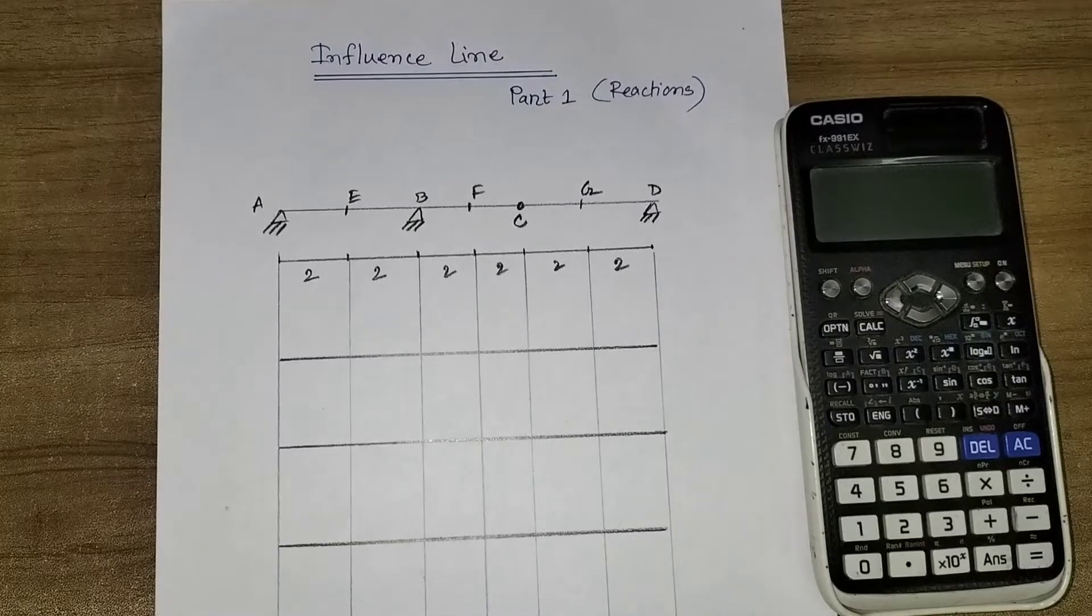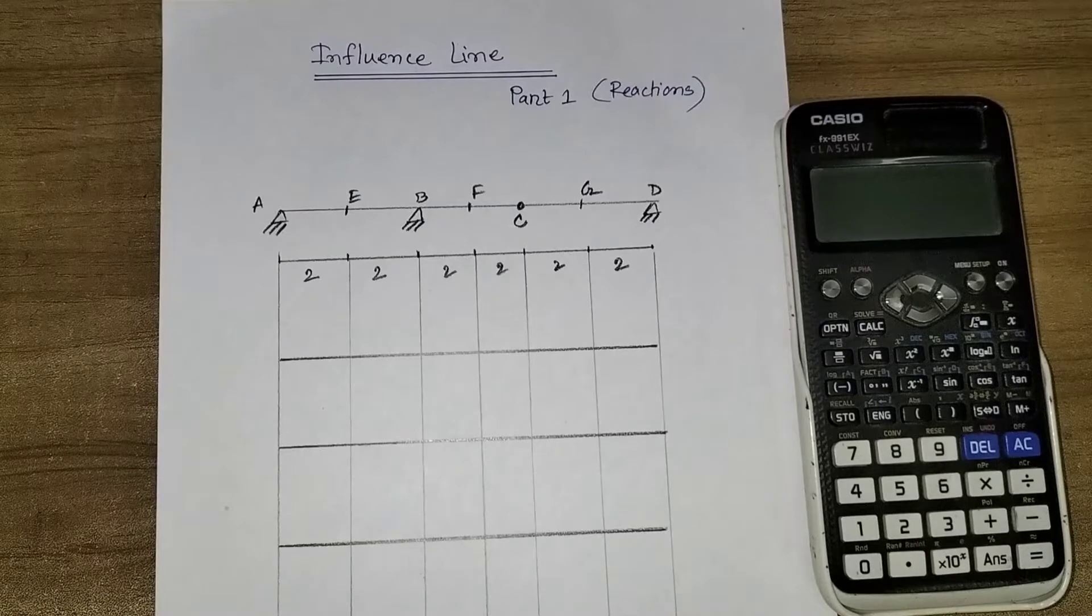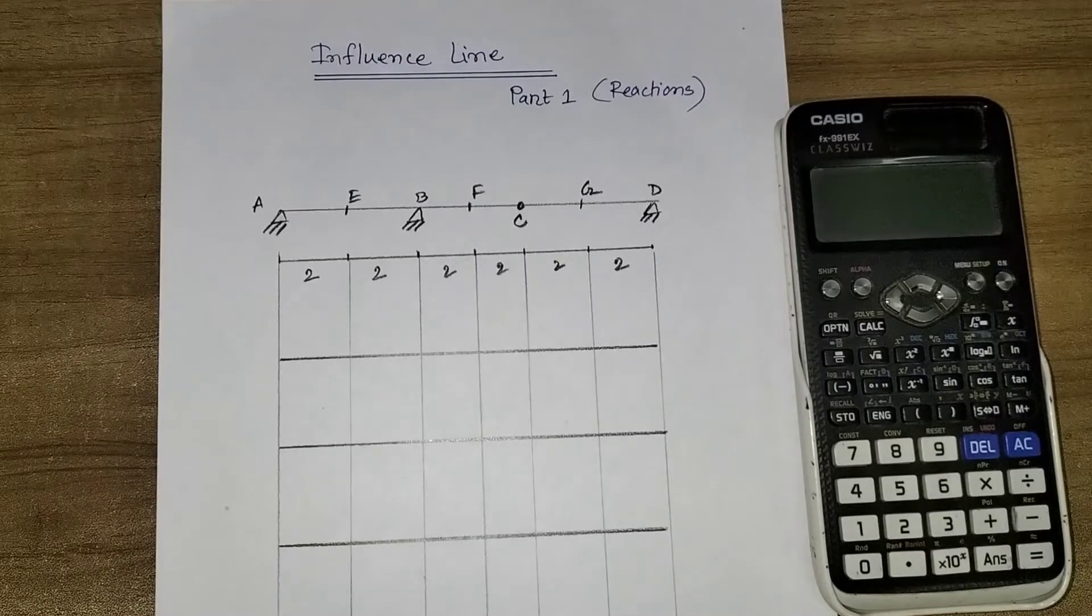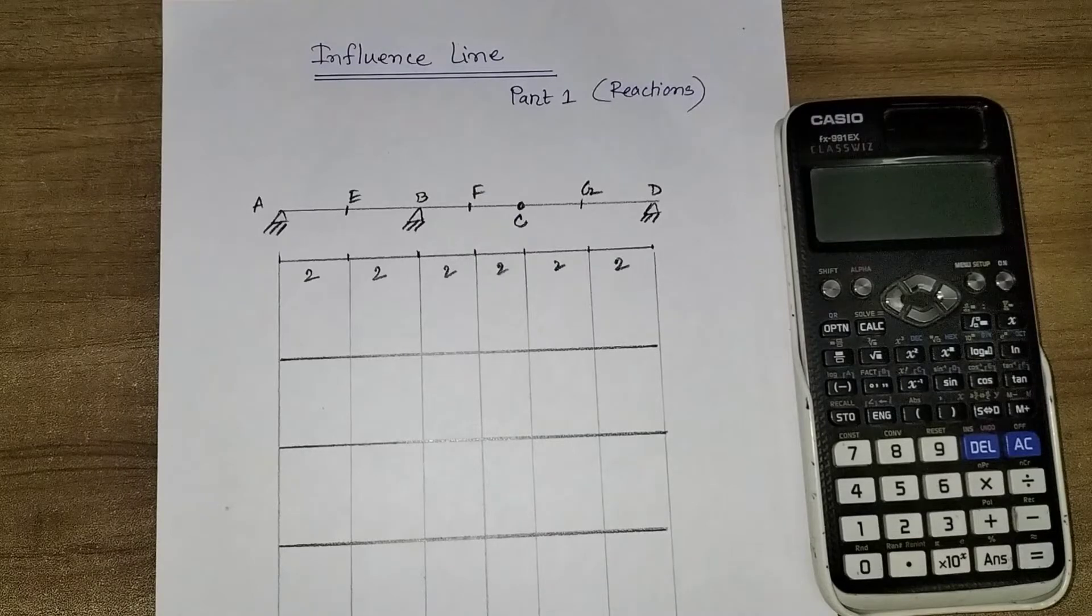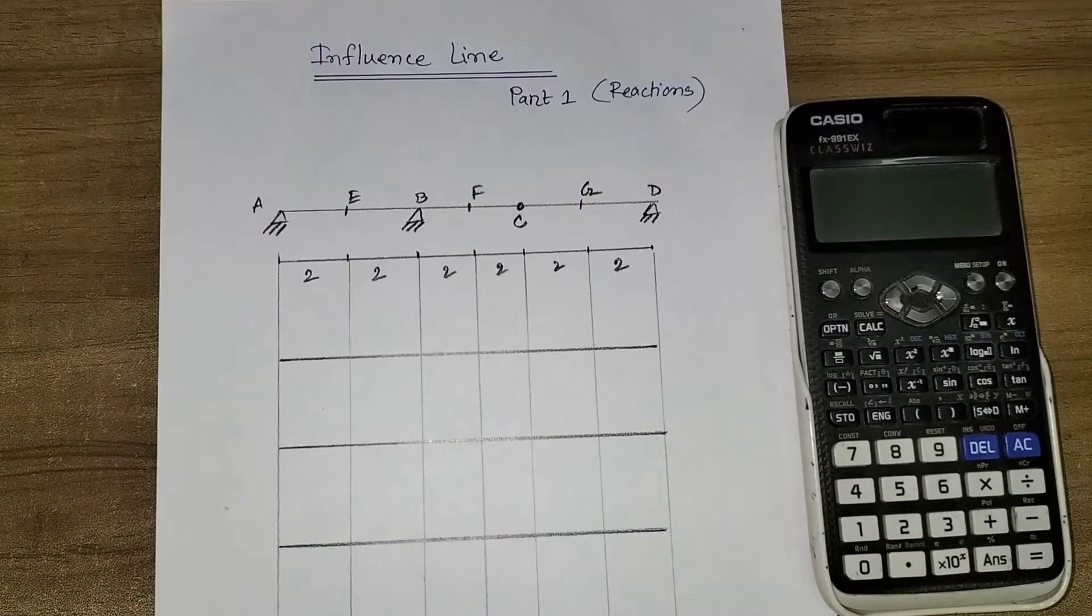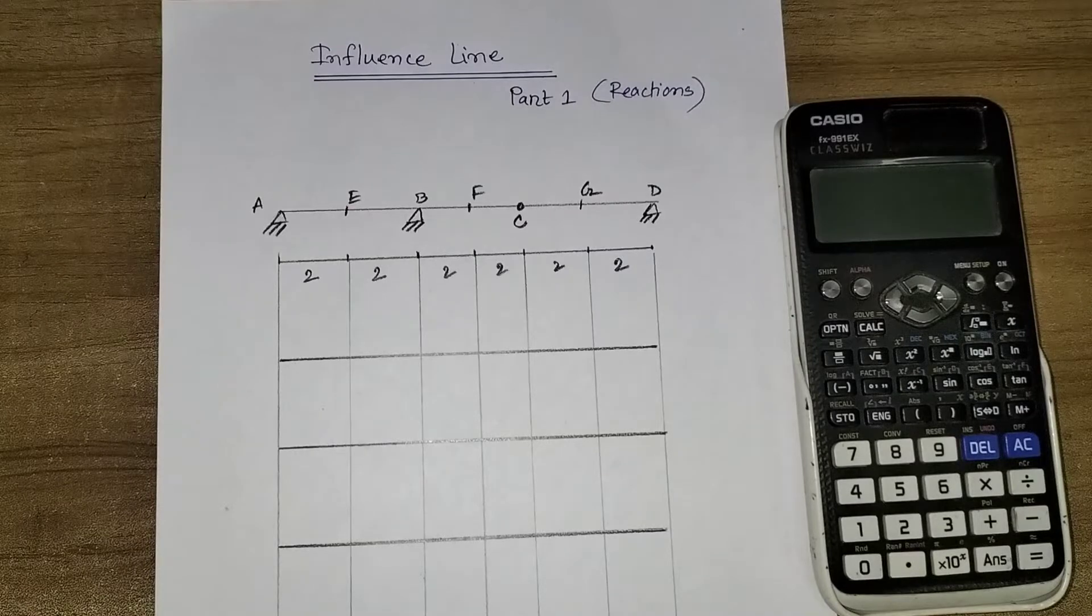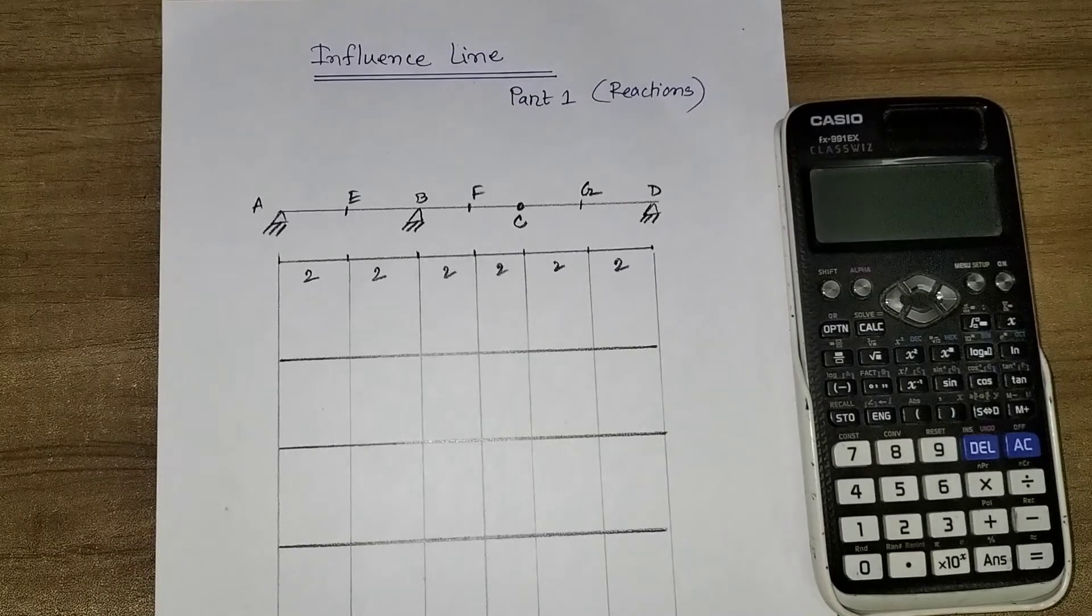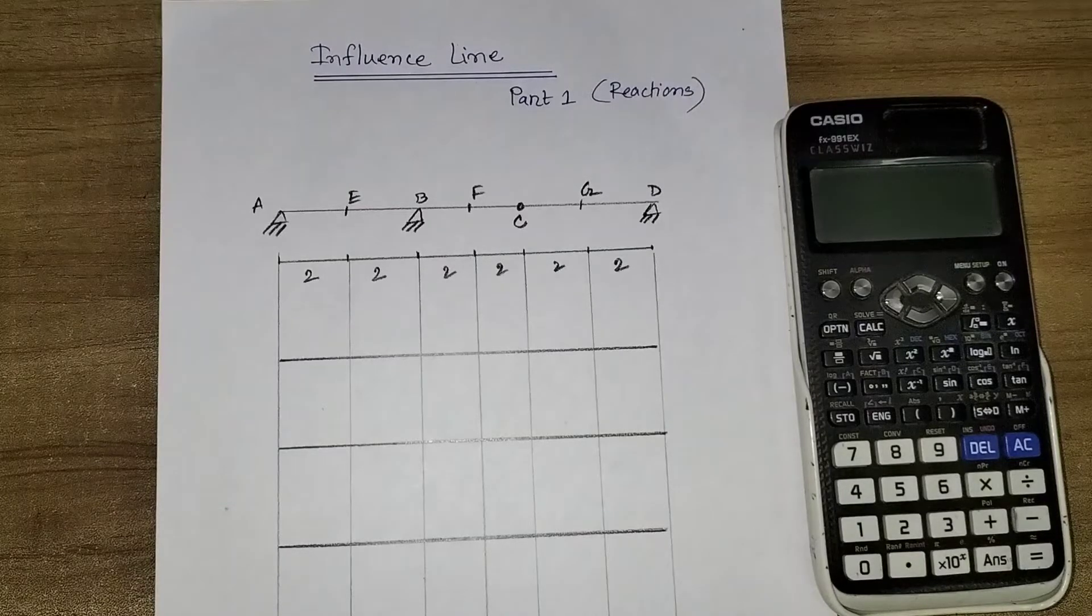Hello guys, welcome to Engineering School. Today I'm gonna draw influence line for a moving load over the A to D span or beam. This is part one for reactions only, so today I'm gonna draw only the reactions at support A, support B, support D, at the point E, F, G for a moving load that is directed towards A to D.